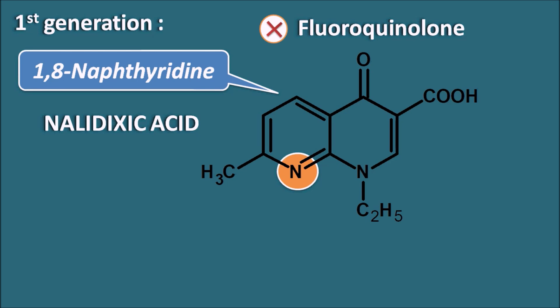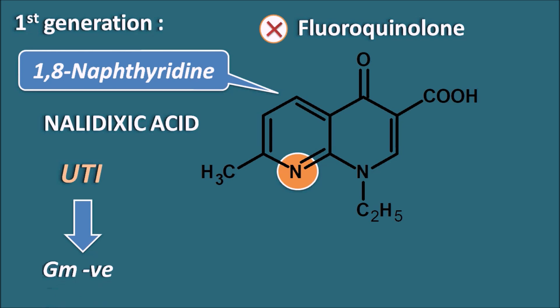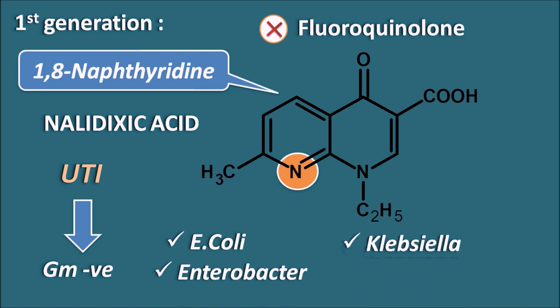Nalidixic acid is particularly used in the treatment of urinary tract infections produced by gram-negative organisms. Within gram-negative organisms, it is useful against E. coli, Enterobacter, and Klebsiella infections. However, this drug is not suitable for the treatment of Pseudomonas infections. Nalidixic acid was the first drug developed in the quinolone category and is nowadays confined to the treatment of urinary tract infections.